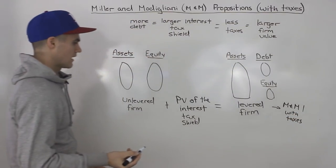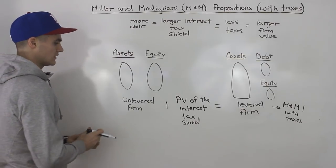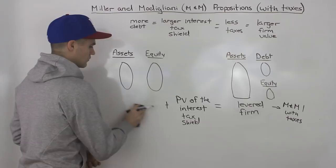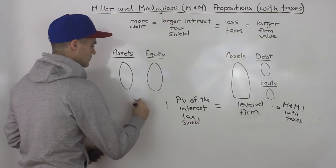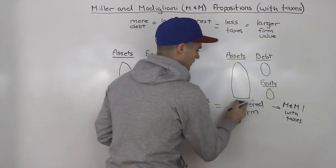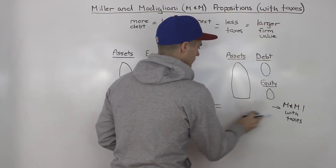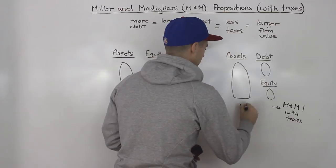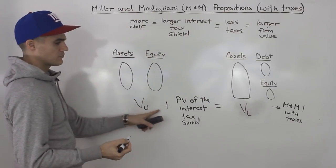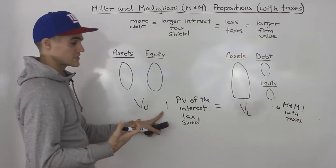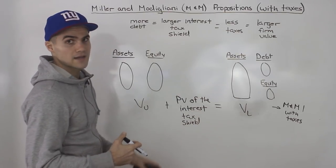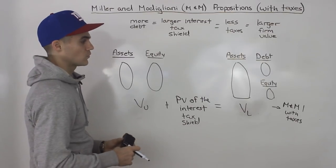So the value of an unlevered firm plus the present value of the interest tax shield is equal to the value of the levered firm — and this is M&M Proposition 1 with taxes. In your textbook you might see it represented as VU (value of an unlevered firm) plus the present value of the interest tax shield equals VL (value of a levered firm).